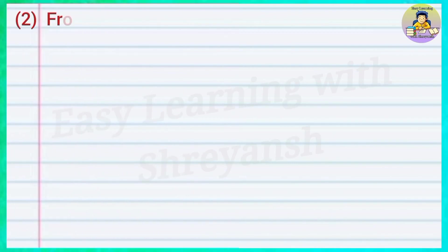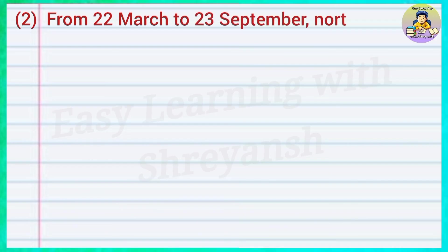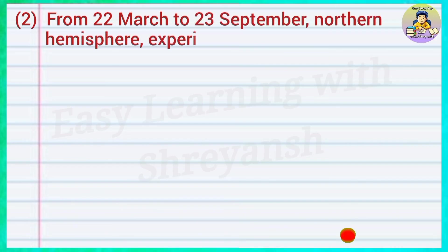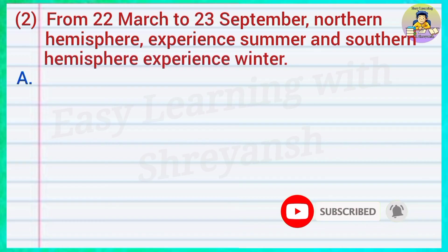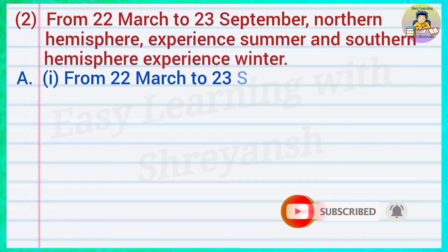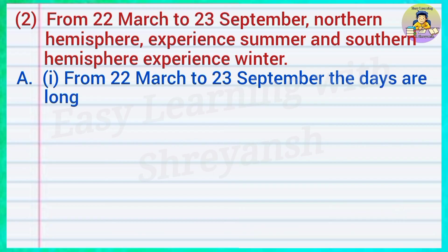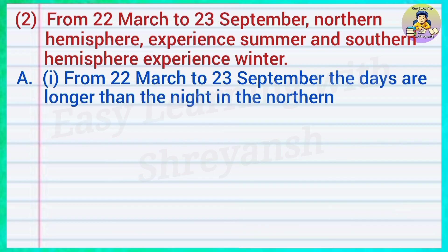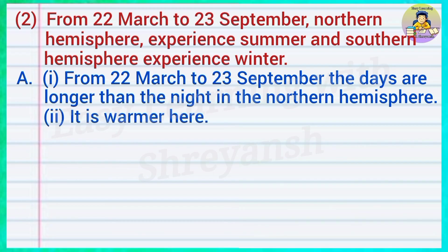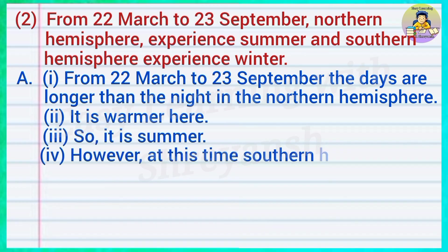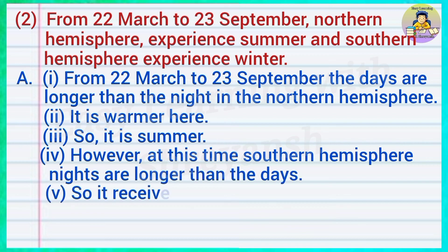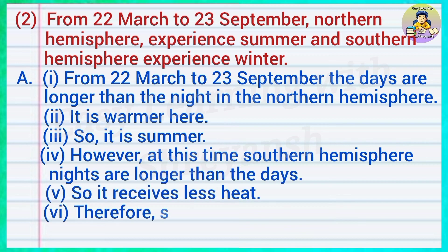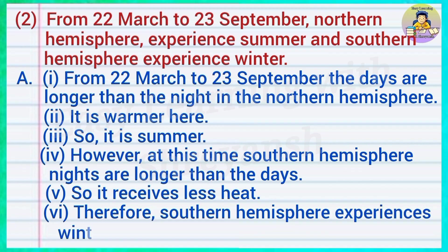Two — from 22 March to 23 September, the northern hemisphere experiences summer and the southern hemisphere experiences winter. Answer: From 22 March to 23 September, the days are longer than the night in the northern hemisphere — it is warmer, so it is summer. However, at this time, the southern hemisphere's nights are longer than the day, so it receives less heat; therefore the southern hemisphere experiences winter.